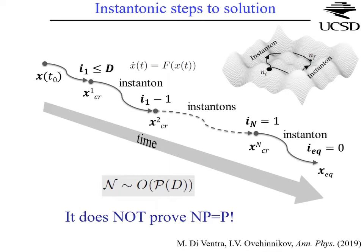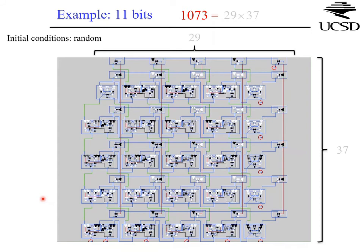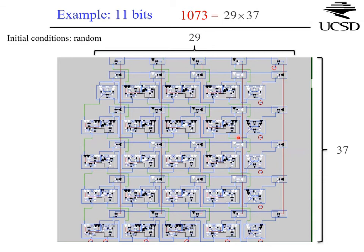Let me show you an example: factorization of the number 1073, which is an 11-bit number. In simulation, the dots represent the zeros and ones at the input and output — there is no difference anymore between input and output. The circles represent the bits of this number at plus one volt for logic one and minus one volt for logic zero. We switch on the input voltages representing this number and let the system self-organize. You can see waves going back and forth in the circuit.